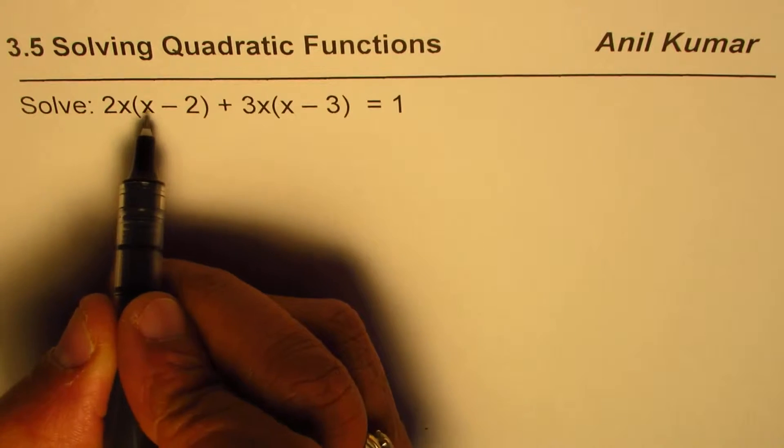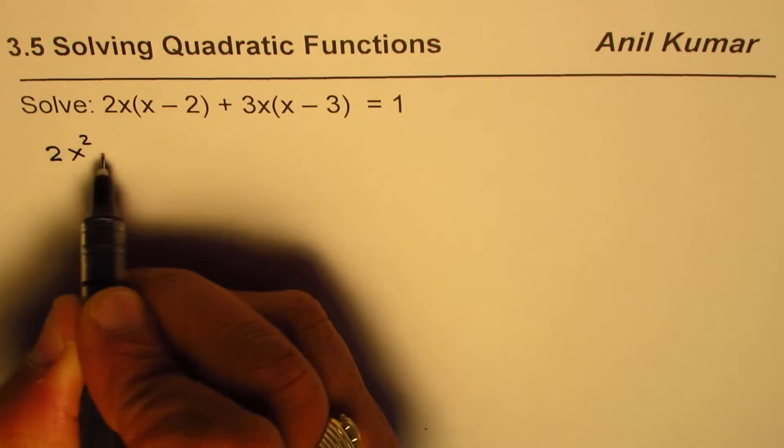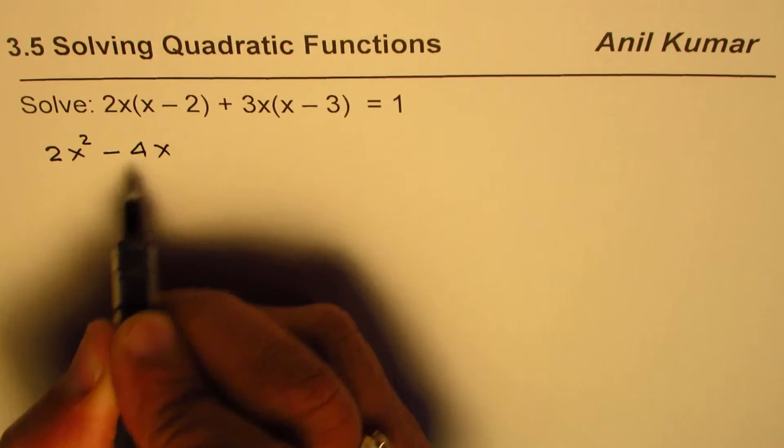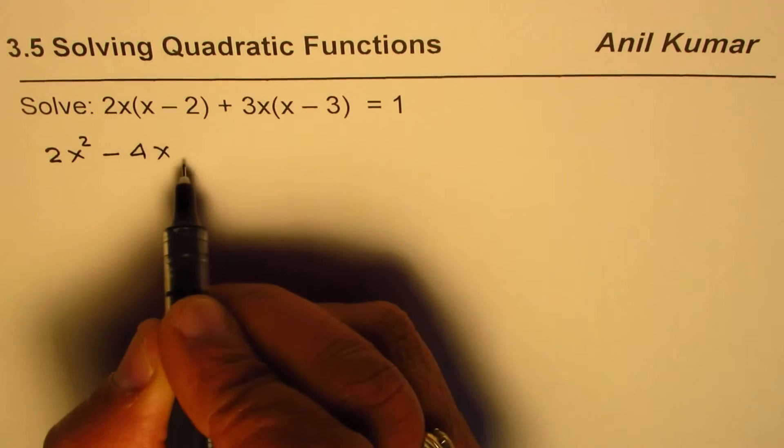The first one, 2x times x minus 2, when you expand, you get 2x squared minus 4x. That is, we have multiplied 2x by x minus 2. We get these two terms.